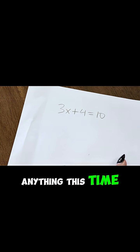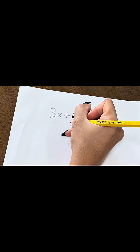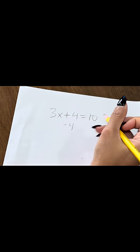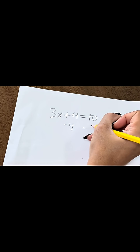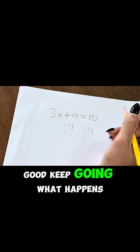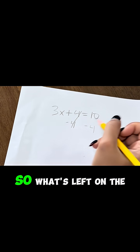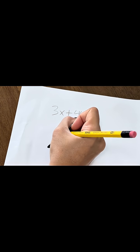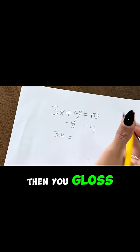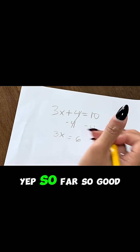So I'm not going to say anything this time. What's missing there in front of the... Okay. Good. Good. Keep going. What happens to the 4s now? They cancel out. So what's left on the left? 3x. And then equals... 6. Yep, yep. So far, so good.